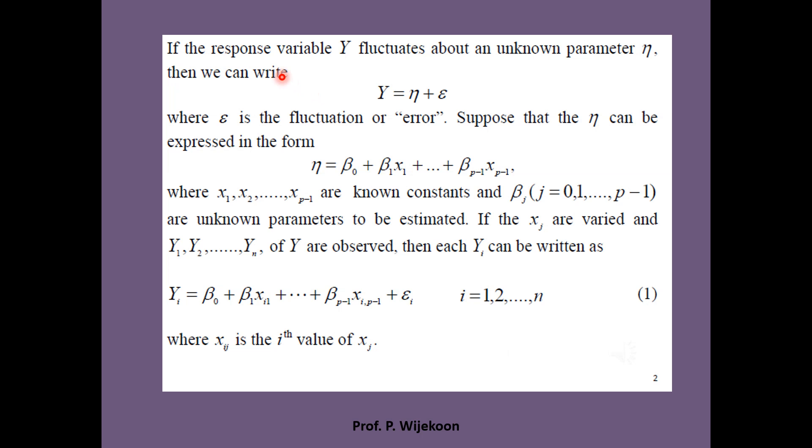When defining linear models, we mainly consider the fluctuations of the response variable y. For example, assume that the response variable y fluctuates about an unknown parameter eta. Then we can write this fluctuation mathematically as y equals eta plus epsilon. Here epsilon is the fluctuation or error.